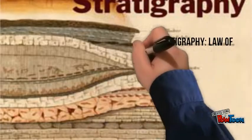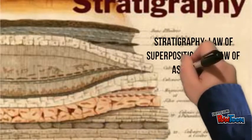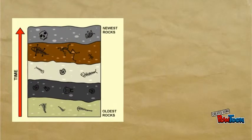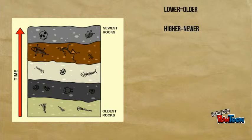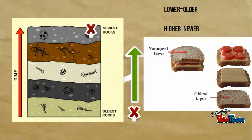Stratigraphy is a sequence of earthen layers, or strata, that reflect the passage of time. The law of superposition is the principle that the sequence of strata, from bottom to top, reflects the order of deposition from latest to earliest. In other words, the oldest things are on the bottom while the most recent are on the top.